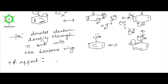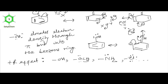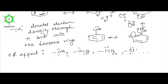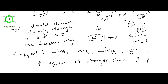This effect is called the plus R effect. The plus R effect is shown by the hydroxyl group (OH), the amino group (NH2), and chlorine. These are functional groups having lone pairs, and they generally show the plus R effect, resulting in an increase of electron density in the benzene ring. Although these are electronegative elements and also show the minus I effect, always keep in mind that the R effect is stronger than the I effect.